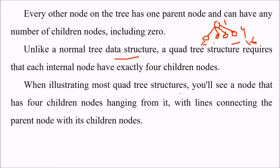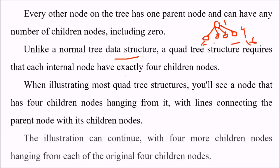When illustrating most quadtree structures, you will see a node that has four children nodes hanging from it with lines connecting the parent node with its child nodes. This illustration is iterative, with four more children nodes hanging from each of the original four children nodes.